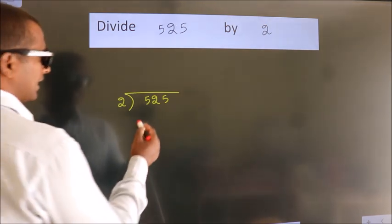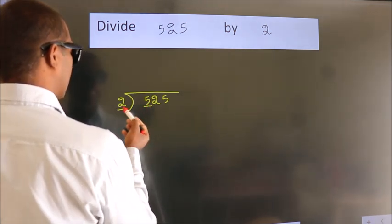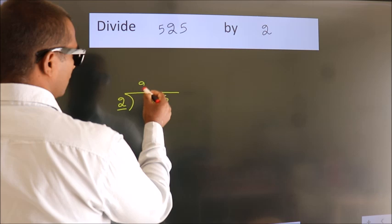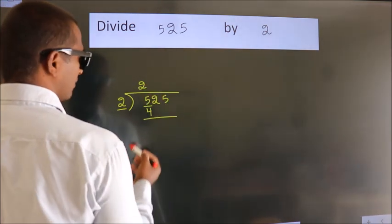Next, here we have 5, here 2. A number close to 5 in 2 table is 2 2s, 4. Now, we should subtract.